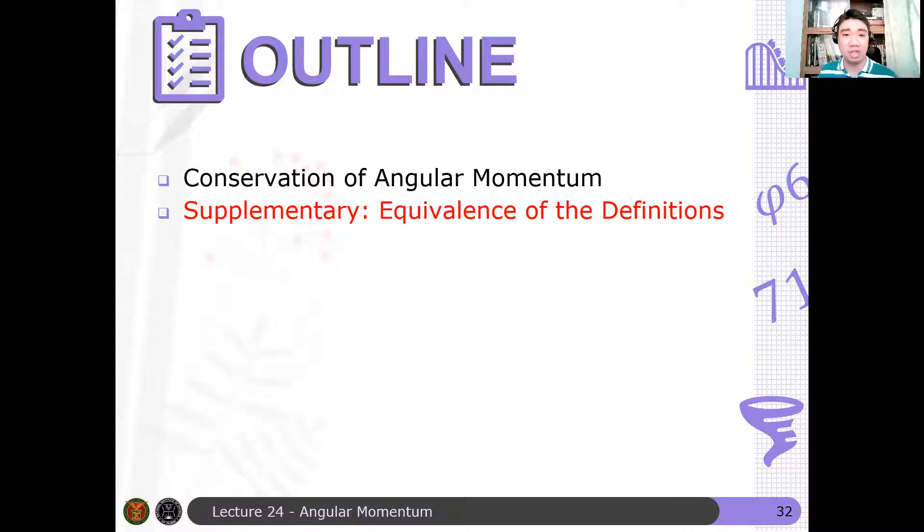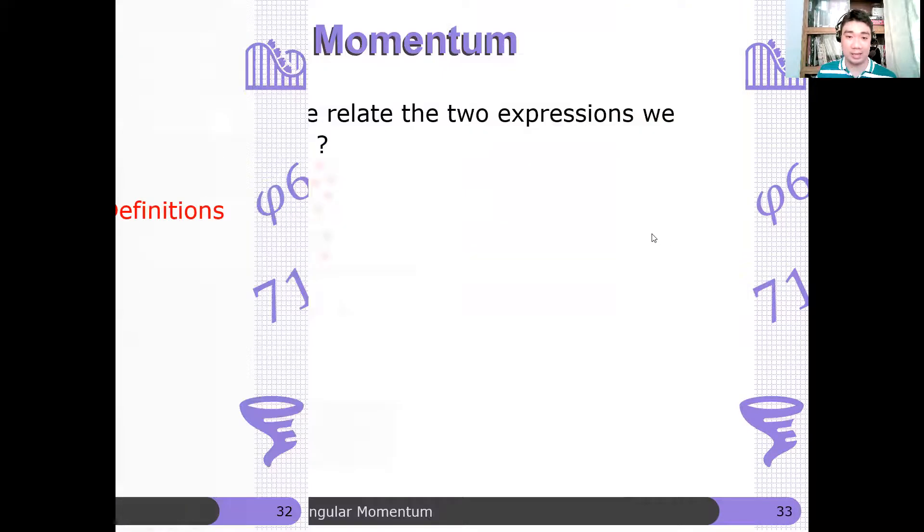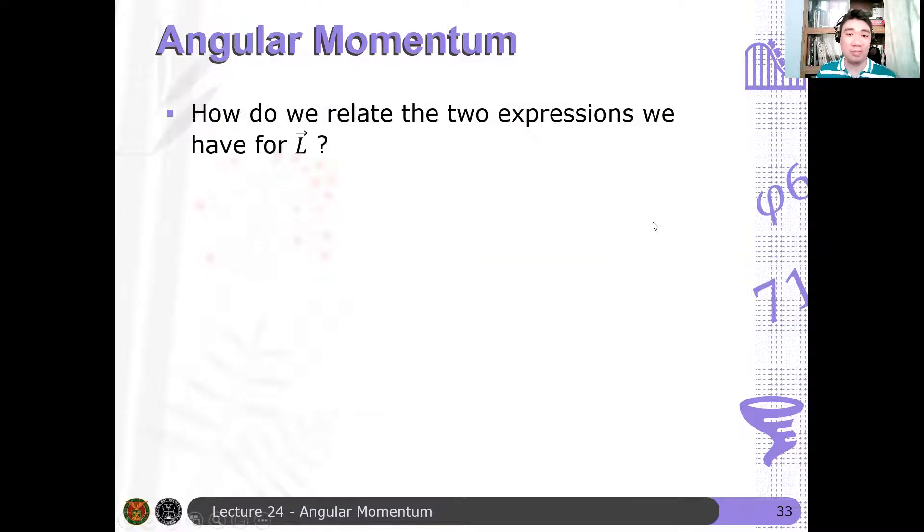But I've shown you only an illustration that these are two equivalent definitions. Now, how do we do the more formal way for that? Let's go to this. So how do we relate the two expressions we have for L? So we have R cross P definition and I omega definition.